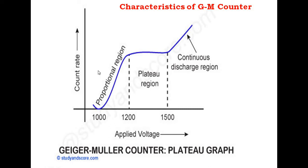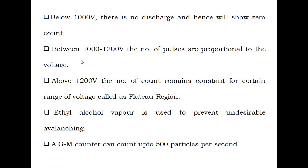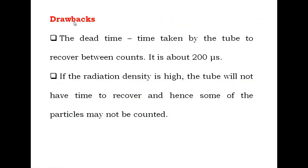There is a drawback as well. The main drawback of the GM counter is dead time — the time taken by the tube to recover between counts, which is about 200 microseconds. If the radiation density is high, the tube will not have time to recover and hence some of the particles may not be counted.